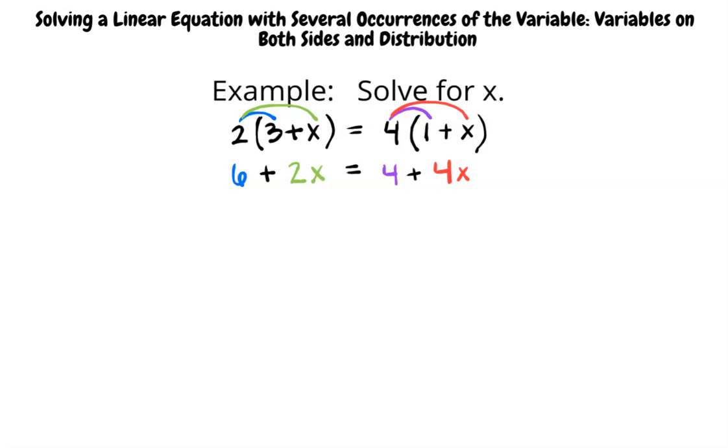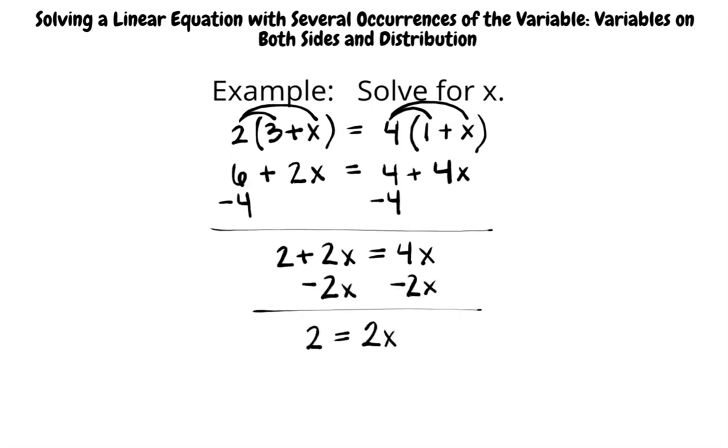Now we have the equation 6 plus 2x equals 4 plus 4x. We subtract 4 from both sides of the equation and write 2 plus 2x equals 4x. Then we subtract 2x from both sides of the equation and write 2 equals 2x. We can now divide both sides by 2 and find that x is equal to 1.